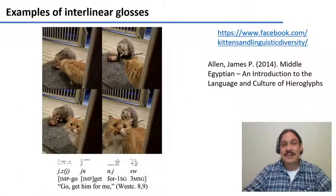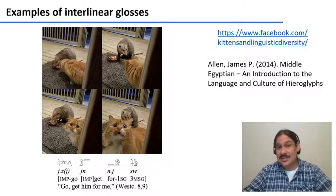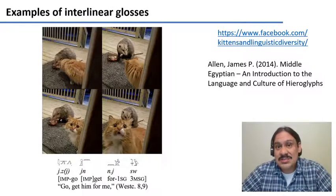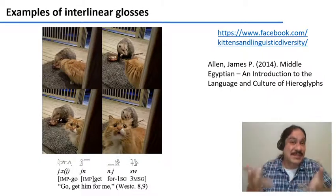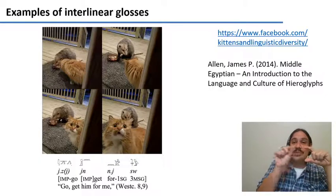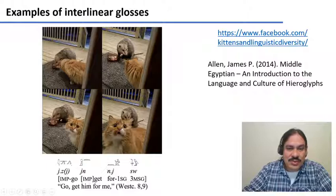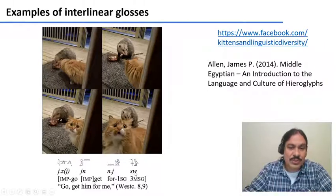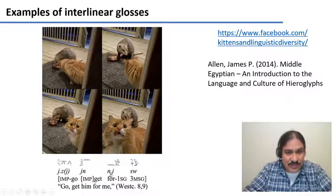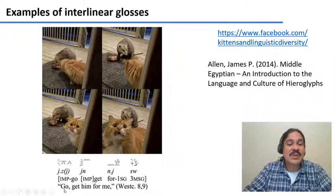What happens if you have a different writing system in your language — something that is not written with Latin letters? It's really your choice. You can use the transcription that everyone in the discipline will understand, like in Aramaic, or you can also include the original writing. Here, in this example from a grammar of ancient Egyptian, we first have the words in the ancient Egyptian writing system. Then we have a transcription form that would be understood by Egyptologists. Third, we have the translation of the morphemes in each of the words, and they're aligned. And finally, we have a translation in English for the whole sentence: 'Go get him for me.'